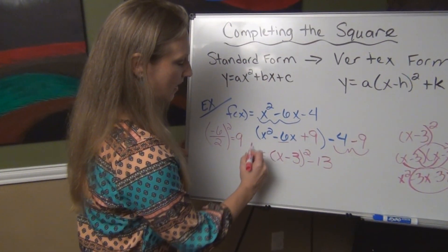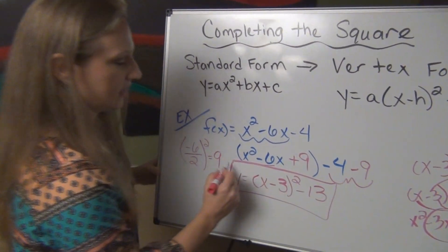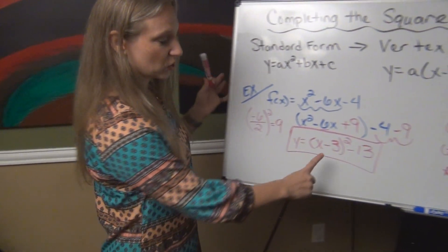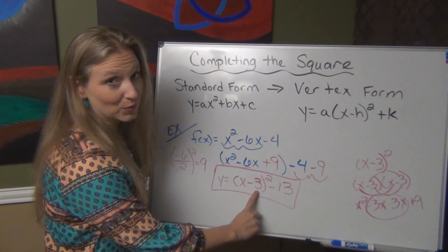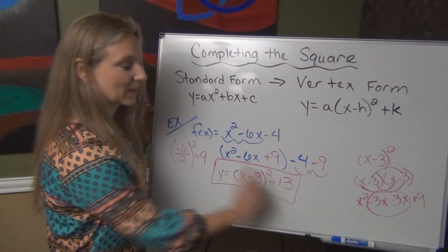You will notice I now have an equation in vertex form, and I can see that I have a vertex at 3, remember we always say change the sign of the h, negative 13.